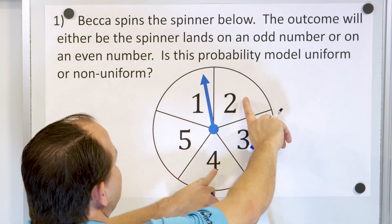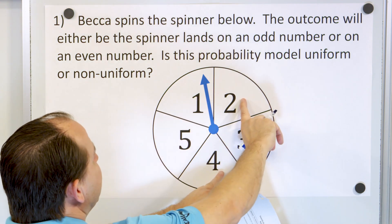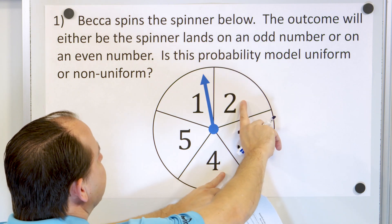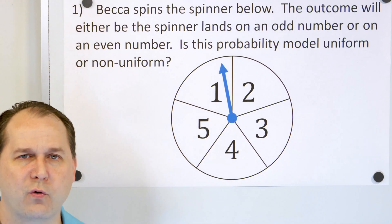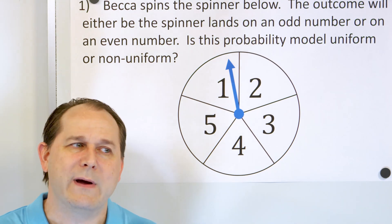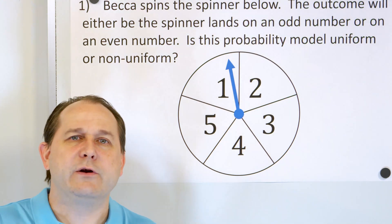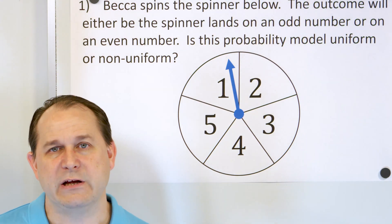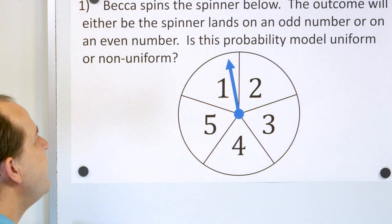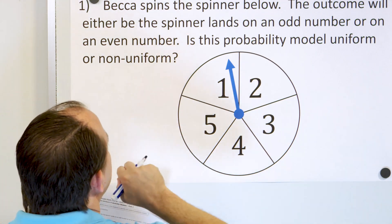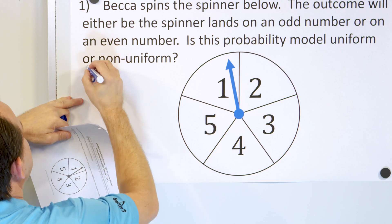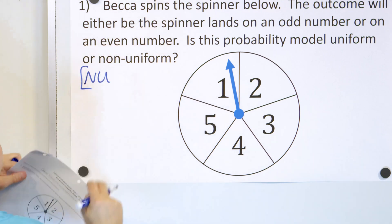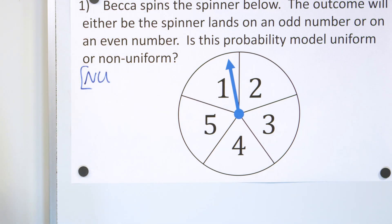You can see that you have a two and a four — those are the even numbers, only two spots — but you have three odd spots. So you can answer the question without doing anything more. When you have an unequal number of outcomes, it's going to be non-uniform. So is this model uniform or non-uniform? Non-uniform. N-U means non-uniform. Now let's go a little farther and calculate this.